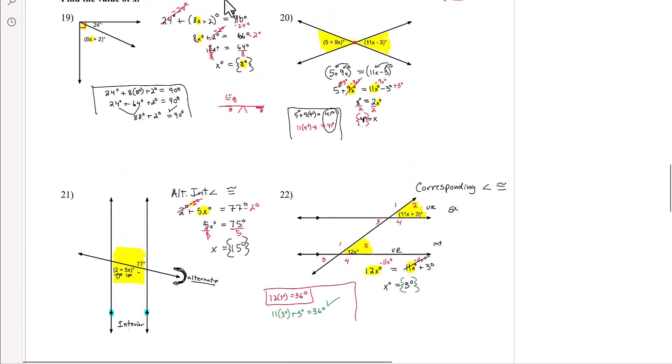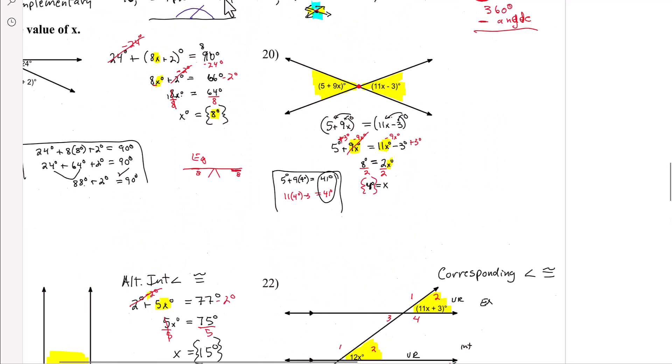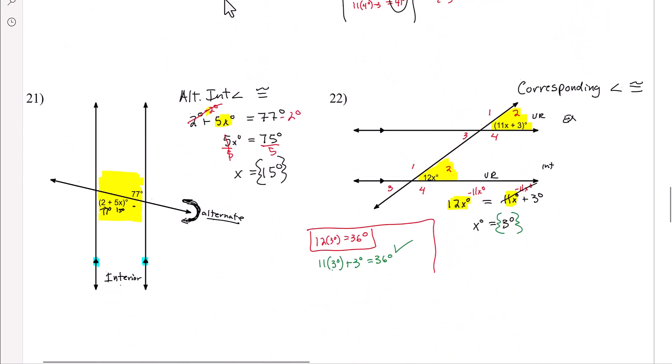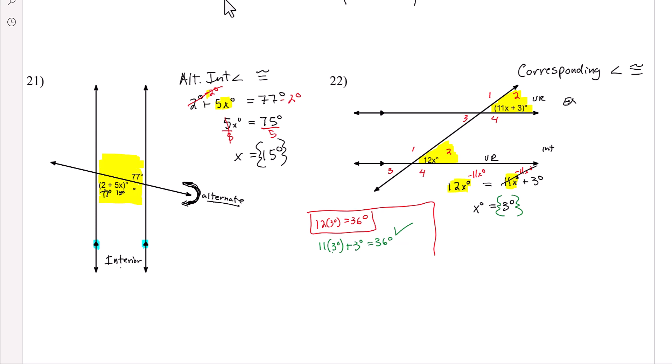Alright, we did all four of those. So that's how you use angle relationships. You have to know, do they add up to 90, do they add up to 180? Are they equal to each other, like vertical, alternate interior, and corresponding? So you have to understand the angle relationships to know how to set up the problems.